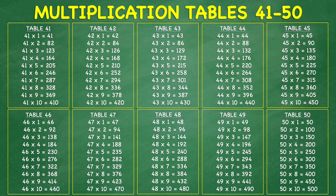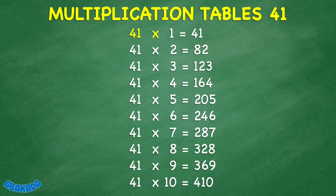Multiplication tables 41 to 50. 41 times 1 equals 41. 41 times 2 equals 82. 41 times 3 equals 123. 41 times 4 equals 164. 41 times 5 equals 205. 41 times 6 equals 246. 41 times 7 equals 287.